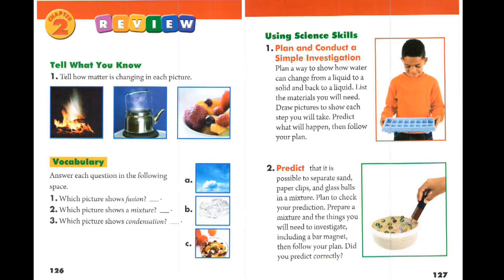6. Predict that it is possible to separate sand, paper clips, and glass balls in a mixture. Plan to check your prediction. 7. Prepare a mixture and the things you will need to investigate, including a bar magnet. Then follow your plan.